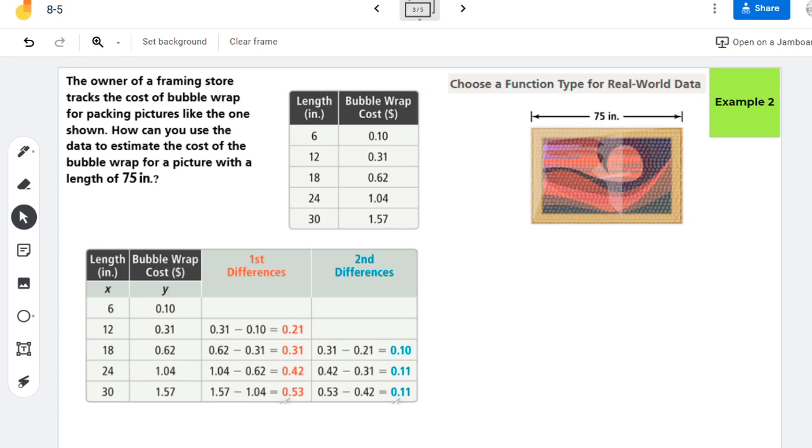So the first thing that we're going to do is figure out if we need a linear model, a quadratic model, or an exponential model. That means we need to find our first differences and second differences, and if necessary, our common ratio.